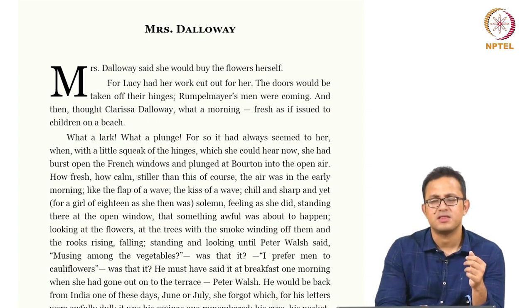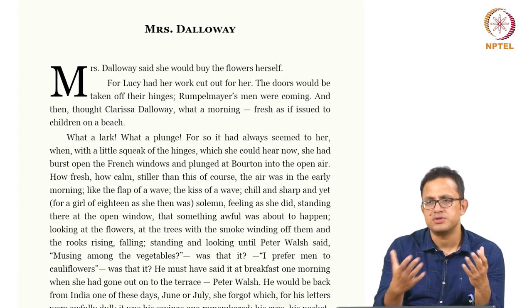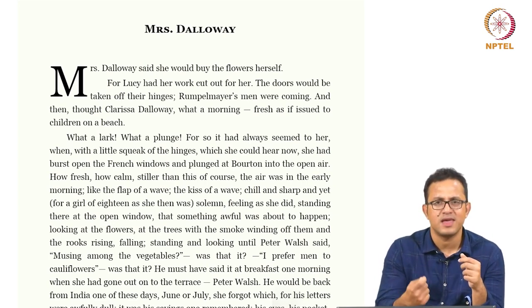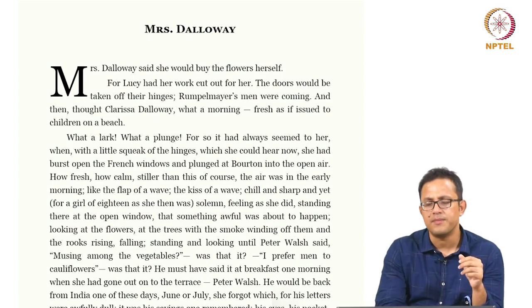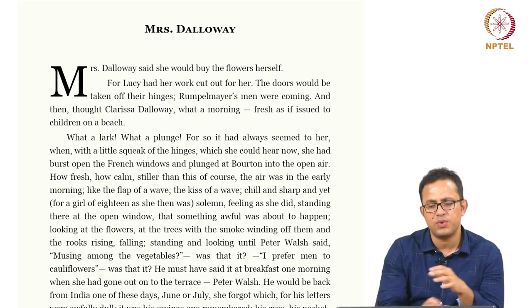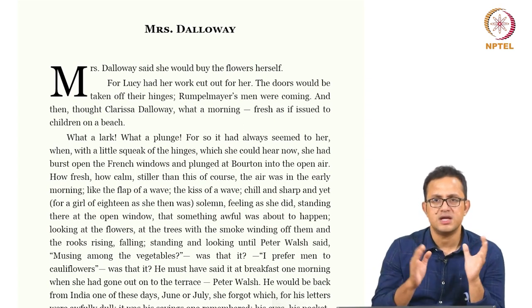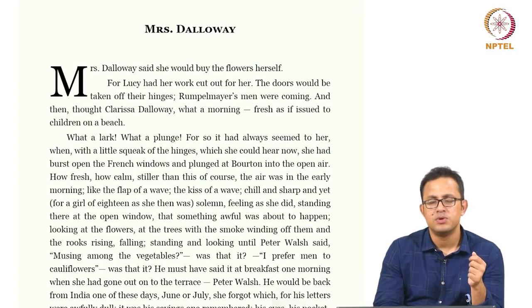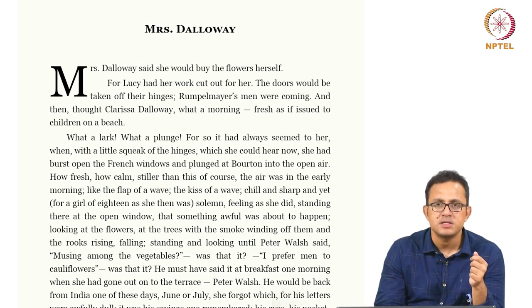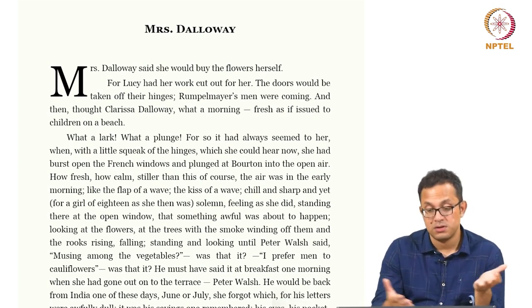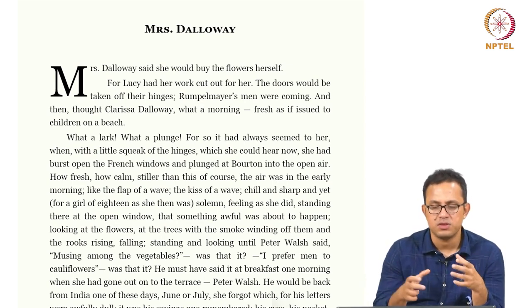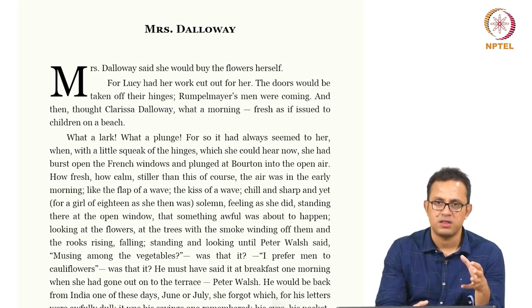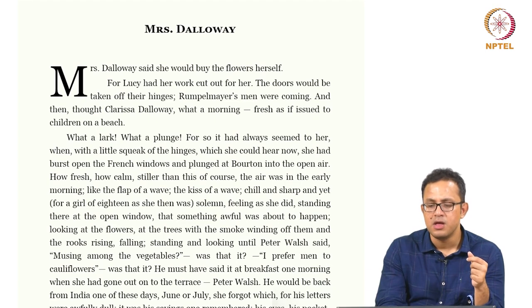He thinks about his friends — Evans and others — who died in the war, and there is always this degree of survivor's guilt that he suffers as someone who survived the war. Those episodes give very vivid and graphic details of the war, but they are very sporadic. The rest of the novel is about the seeming gentility of the city — upper-middle-class Londoners thinking of throwing a party, which never quite takes off by the time the novel ends.